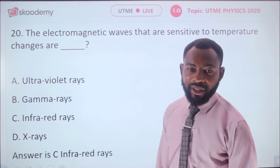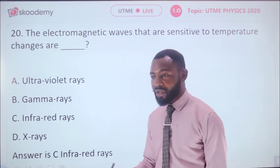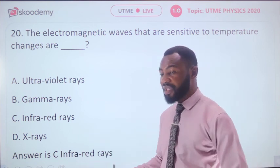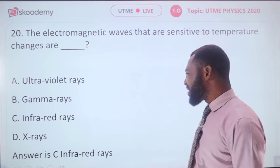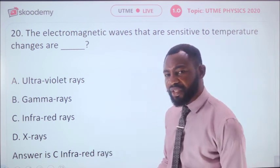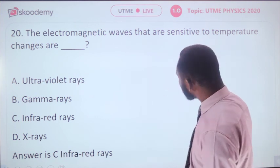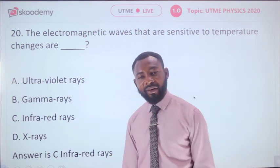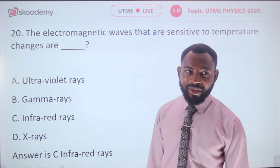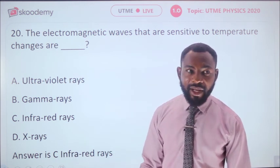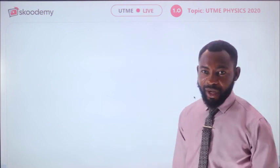Question 20: The electromagnetic waves sensitive to temperature changes are — ultraviolet rays, gamma rays, infrared rays, or X-rays? Ultraviolet rays come from the sun and cause skin burns. Infrared rays come from heat sources like heated bodies and walls. The electromagnetic waves sensitive to temperature changes are infrared rays. That brings us to the end of class — check Scudemy for links to UTME and SSCE courses.